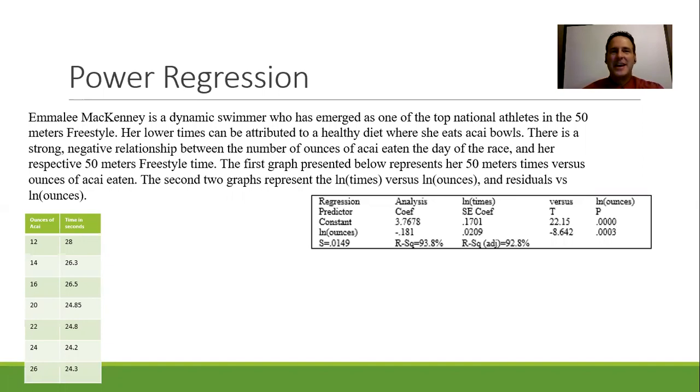So let's talk about Emily for a second. She is a dynamic swimmer who has emerged as one of the top national athletes in the 50-meter freestyle. Her lower times, and remember lower times means a better time, can be attributed to a healthy diet where she eats acai bowls. There is a strong and negative relationship between the number of ounces of acai eaten per day of the race and her respective 50-meter freestyle time.